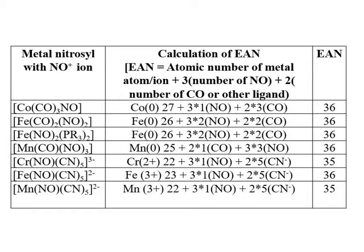Both cobalt and iron molecules are similar in following the EAN rule. Now for the Mn nitrosyl complex, manganese has atomic number 25. CO is a 2-electron donor and nitrosyl is a 3-electron donor, so 3 nitrosyls provide 9 electrons, giving an EAN of 36 again.